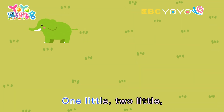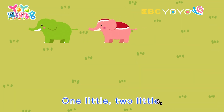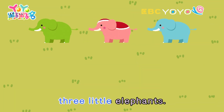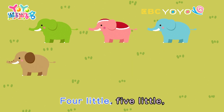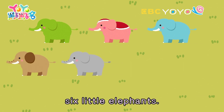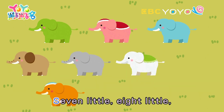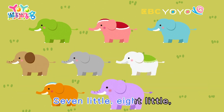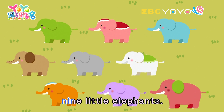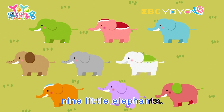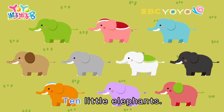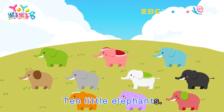One little, two little, three little elephants. Four little, five little, six little elephants. Seven little, eight little, nine little elephants. Ten little elephants.